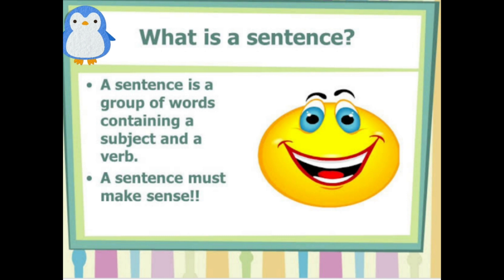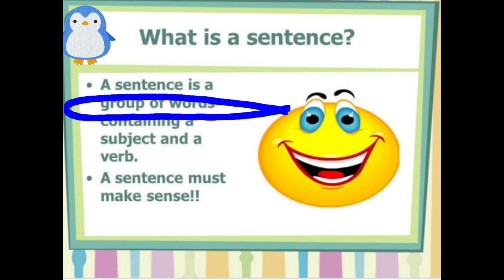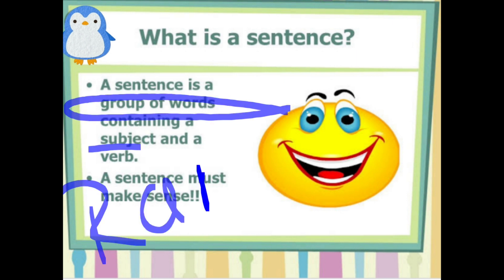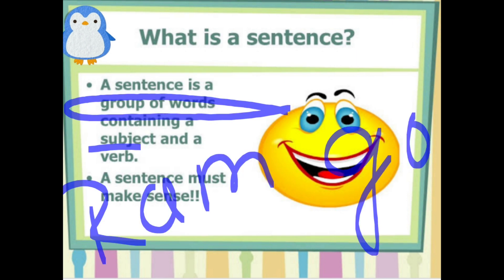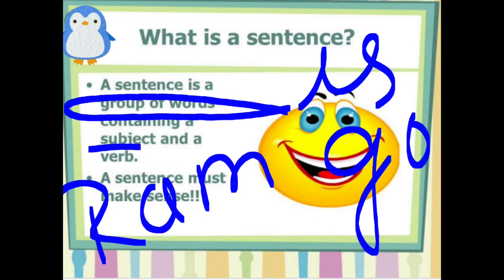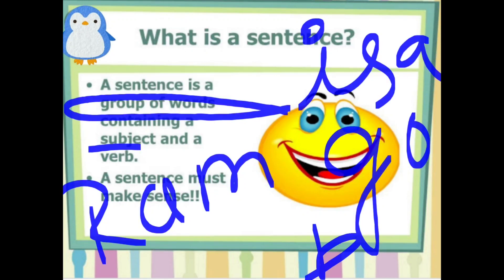A sentence is a group of words containing a subject and a verb. Sentence kya hota hai? Ek jo vakya hota hai, usme kuch shabdon ke samuh hote hain, jisme karta hota hai aur kriya hoti hai. A sentence must make sense. Suppose maine likh diya: Ram, good is a boy.